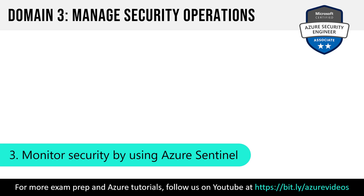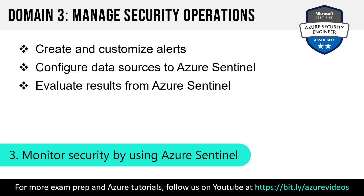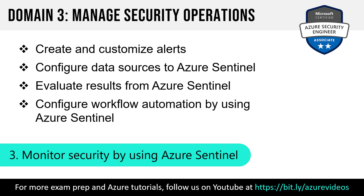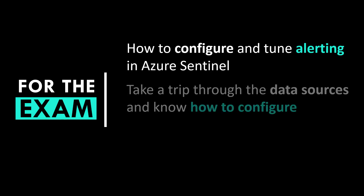Subdomain three is monitor security by using Azure Sentinel. We saw Azure Sentinel come into the AZ-500 exam in force with the July update. The skills here include: create and customize alerts, configuring data sources for Azure Sentinel, evaluate results from Azure Sentinel, and configuring workflow automation with Azure Sentinel. Workflow automation is a phrase we heard in Azure Security Center as the playbook feature moved from Security Center into Azure Sentinel — it's all about building automated response. Knowing how to configure and tune alerts in Azure Sentinel will be important.